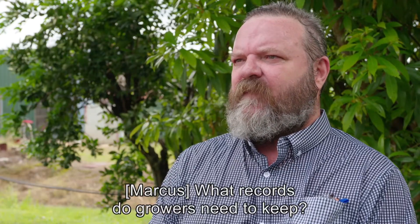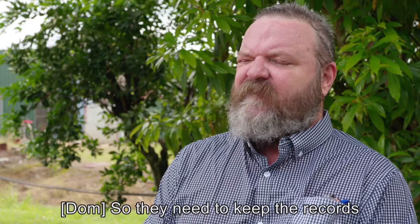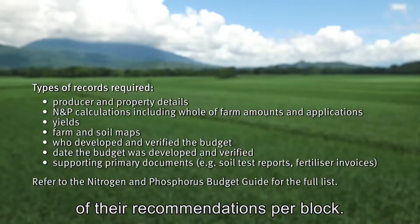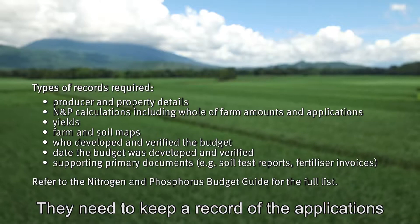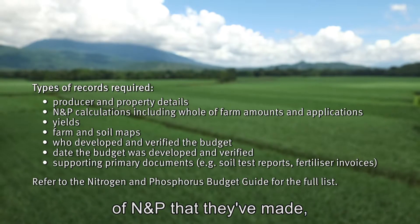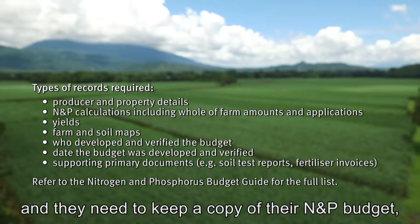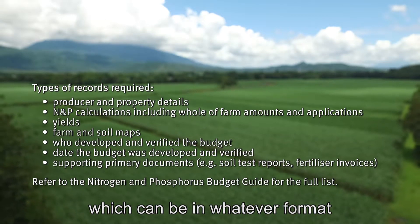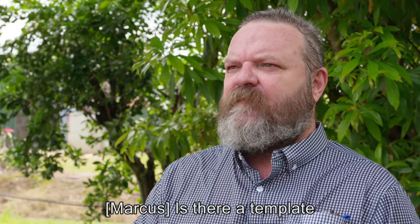What records do growers need to keep? They need to keep records of their recommendations per block. They need to keep a record of the applications of NMP that they've made, and they need to keep a copy of their NMP budget, which can be in whatever format works for the grower and their agronomist.